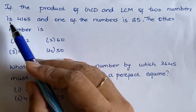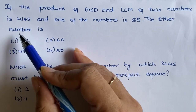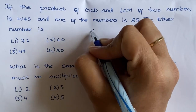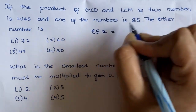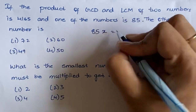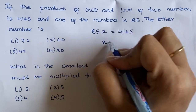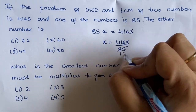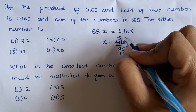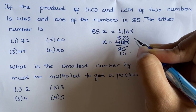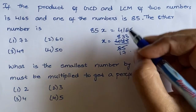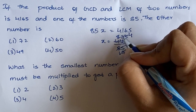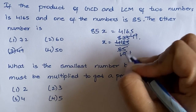If the product of GCD and LCM of two numbers is 4165 and one of the numbers is 85, then the other number is: we know that the product of two numbers equals the product of their LCM and GCD. So x equals 4165 divided by 85, which equals 49. So 49 is the answer.